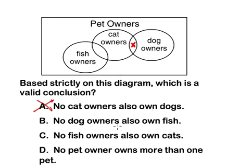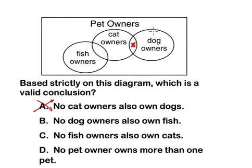The next one: no dog owners also own fish. Which means that if I look at the dog owner's bubble, it better not be touching the bubble of fish owners. If I'm looking at it here, I see that it does not touch that bubble. So that is the right one.